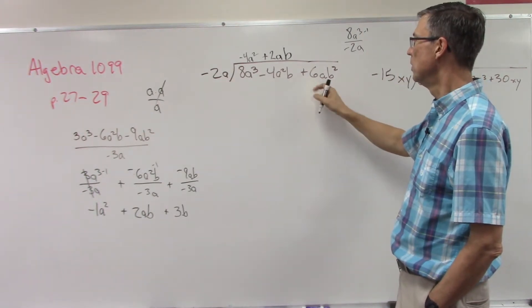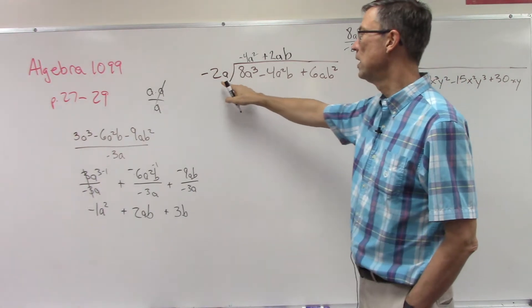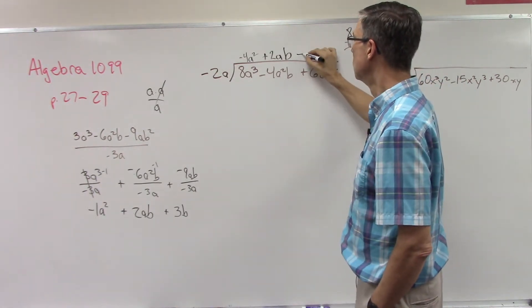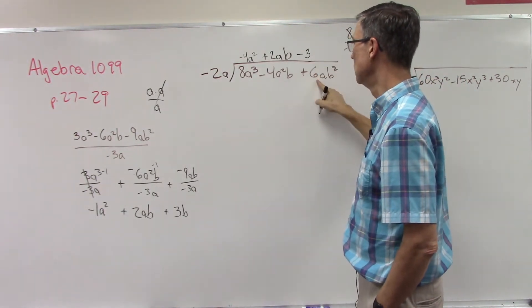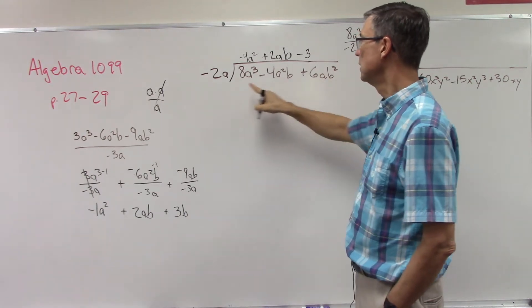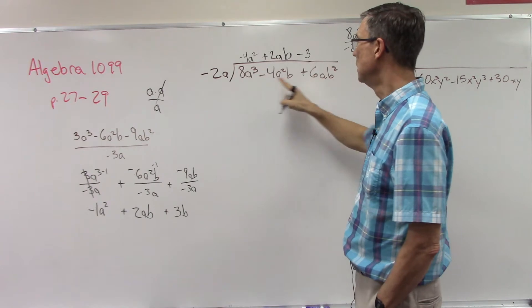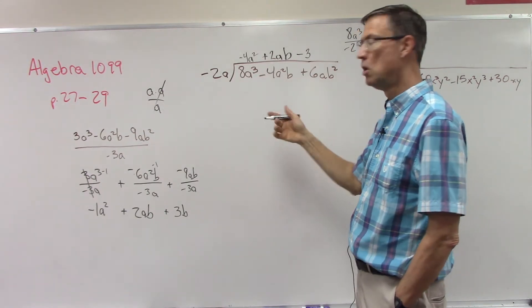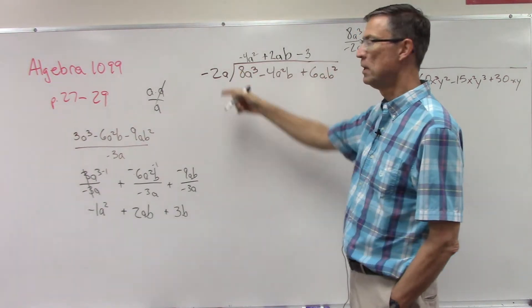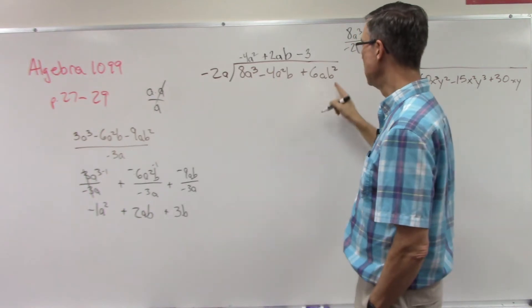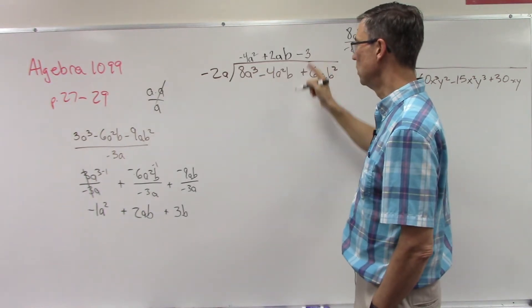Let's start this last one, I'll let you finish this one. But notice we have 6 divided by negative 2, which is going to be negative 3. It looks like the a completely cancels out, so a divided by a, or you can subtract the exponents, 1 minus 1 is 0, and then we still have the B squared which will be up here as part of the answer.